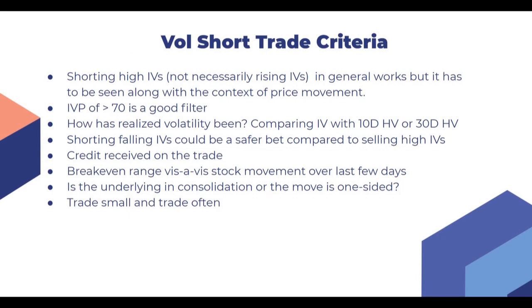What are the criteria I use for a vol short trade? First, shorting high IVs - not necessarily rising IVs - generally works, but it has to be seen in the context of price movement. If the underlying is moving too fast too soon, the IVs will go up and it might not be the best time to short IVs when underlying movement is fast and zigzag. I use IVP as a filter: IVP greater than 70 is a good starting filter. Sometimes I take trades where IVP is even 60 or 55 - it's not a hard rule.